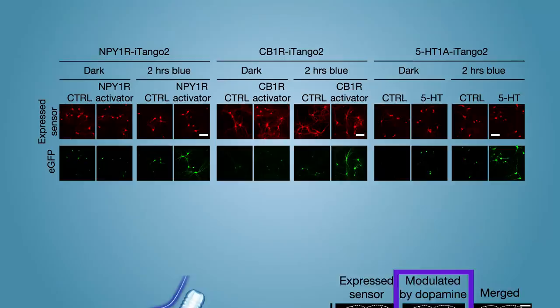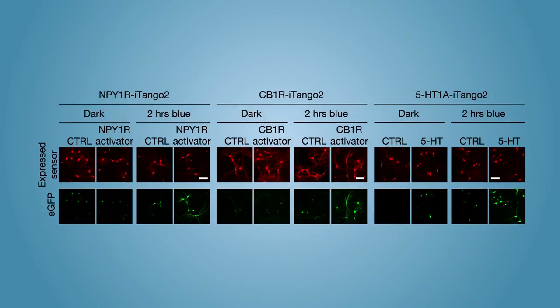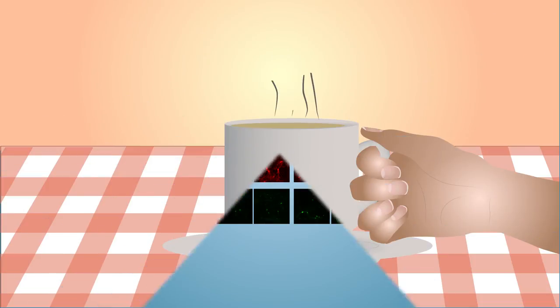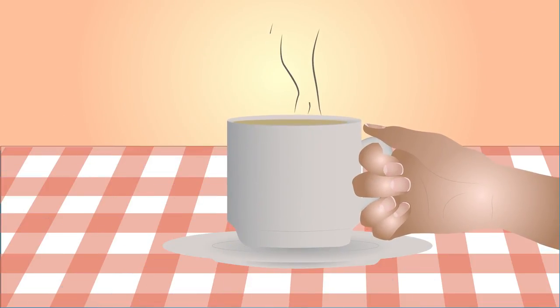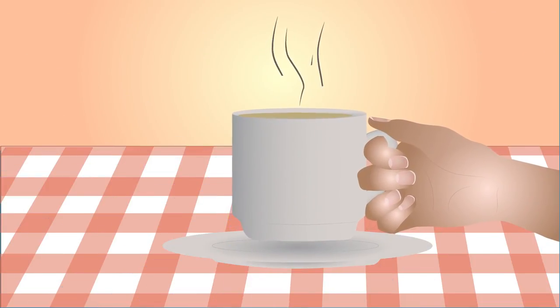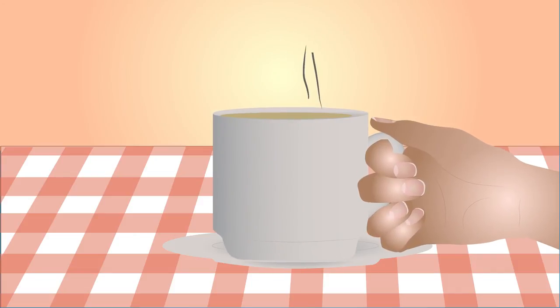The scientists also made improved sensors for other neuromodulators, like serotonin. This arsenal of improved sensors will likely provide considerable insight into how neuromodulators shape behavior, including in addiction and mood disorders.